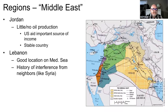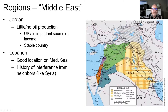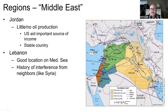In the Middle East, one thing we mentioned when we talked about oil resources is that Jordan is kind of left out of it. It's not in the Persian Gulf or in other areas of the oil field, so it really has little or no oil production. Because of that, its economy is highly dependent on U.S. aid, and Jordan has very strong ties with the United States.